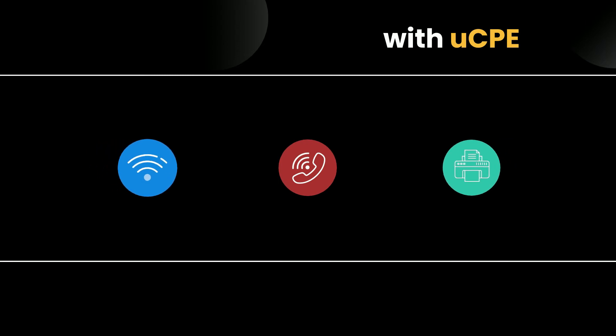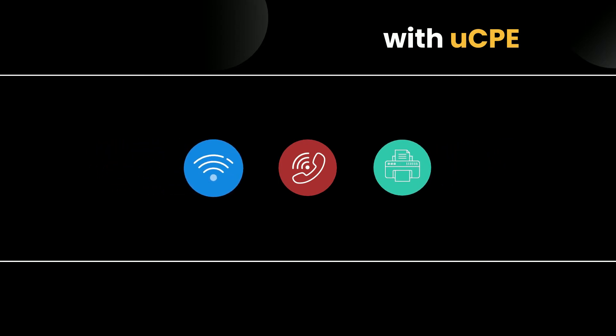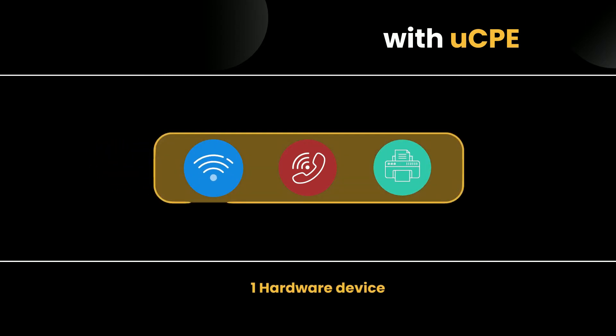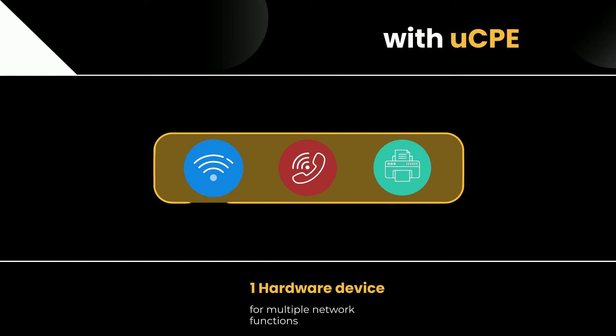The Universal Customer Premises Equipment changes that. The UCPE is a standard hardware device on which various network functions are virtually available. For example, to provide functions for routers, VoIP telephone systems and fax servers, only one hardware device is required.